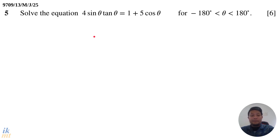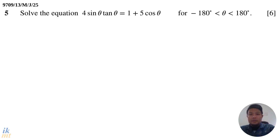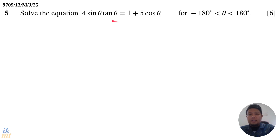Right now, our trigonometric equation has multiple trigonometric functions on one side and another trigonometric function on the other side, so it's not the ideal form to solve. We have to apply some identities and algebraic manipulation. Looking at the equation, one side has cosine and the other has sine — we have sine, tangent, and cosine.